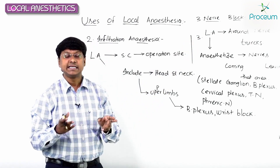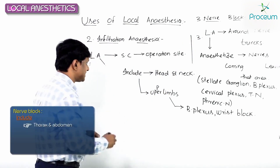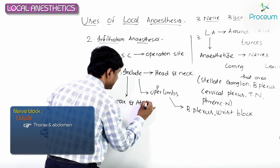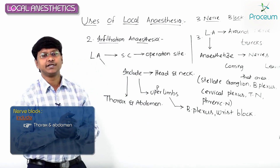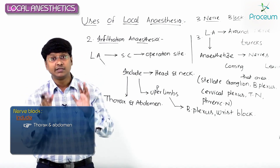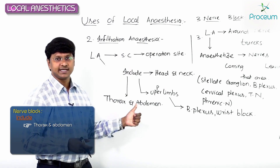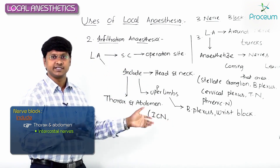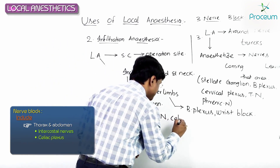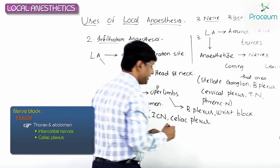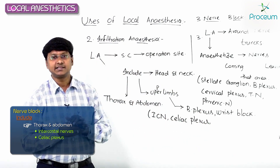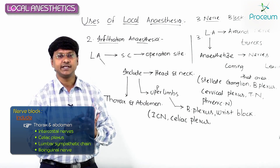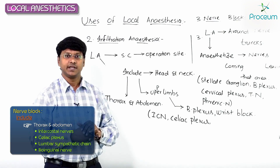The local anesthetic drug can also be injected around the thorax and abdomen to achieve nerve blocks. The nerves that can be blocked here include the intercostal nerves supplying the respiratory muscles, the celiac plexus, the lumbar sympathetic chain, and the ilioinguinal nerve.